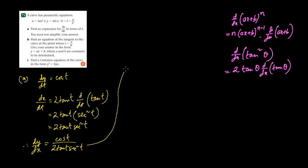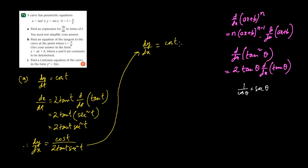Now this can be further simplified. They said you need not simplify your answer, but anyway, if you bring sec² t upstairs using the identity — 1 by sec θ is cos θ — this would become cos² t in the numerator, giving cos³ t divided by 2 tan t.